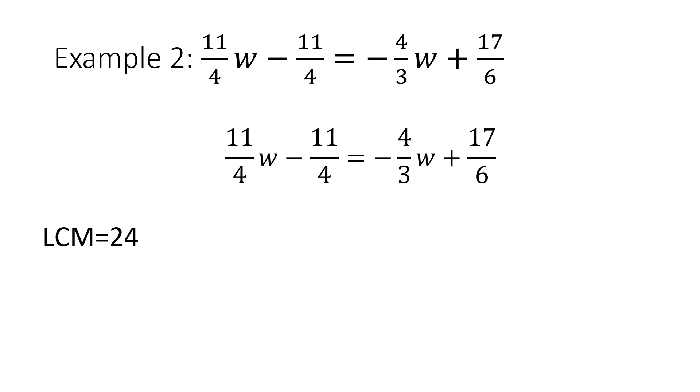I'm going to multiply every single number in my equation by 24. When I do that, it simplifies to 66W - 66 = -32W + 68.